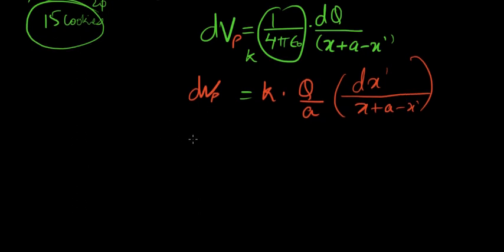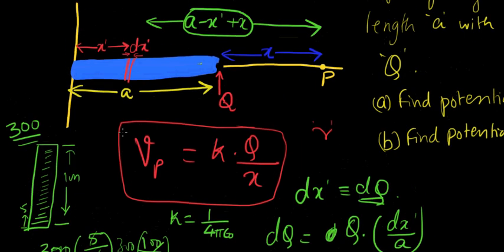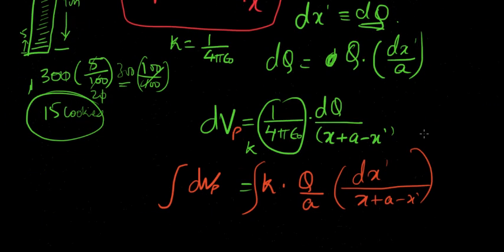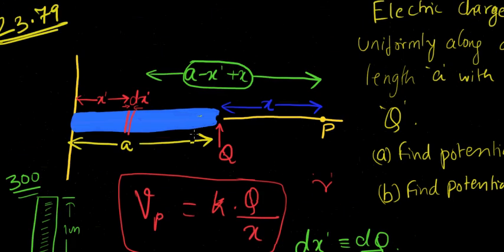Now all we have to do to get VP is to integrate this. Let's integrate it. But we have to find the limits from where to where. Let's go back to the diagram. What is the variable here? Q and a are all constants. X is also a constant because P is at a fixed distance of x from the end of the rod. So x prime is the only thing that's varying.